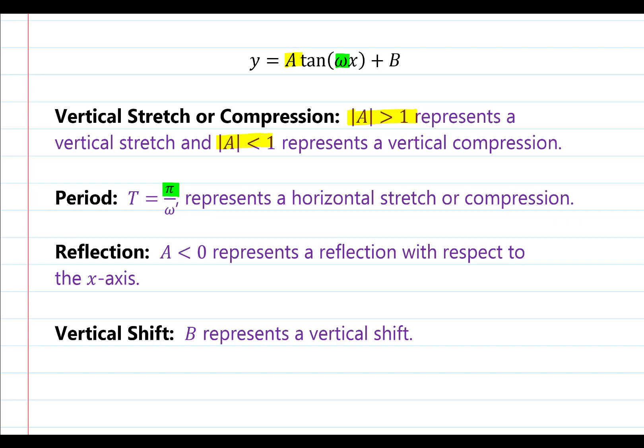And finally, b represents a vertical shift. So if b is positive, it's a shift up. And if b is negative, it's a shift down.